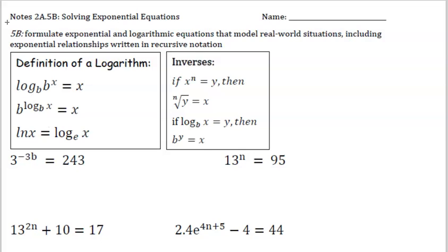Let's look at the definition of a logarithm. Log base b of b to the x power equals x. Those cancel. b to the log base b of x power equals x. The base and the log cancel out. And then the natural log of x equals log base e of x.